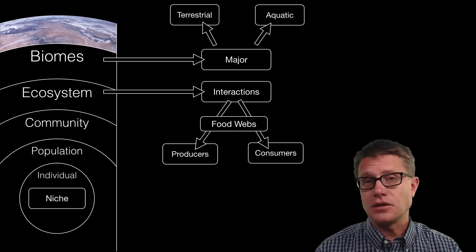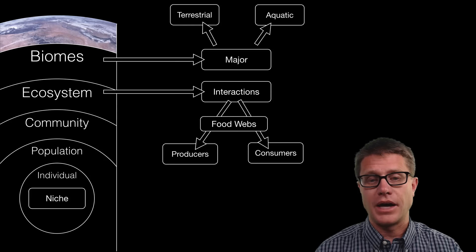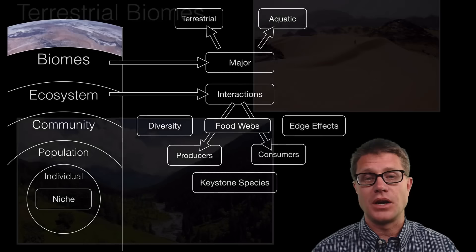We will then jump to individuals and the role of a niche. That is going to be the job that an individual has. We will then move to the importance of keystone species, diversity and then finally edge effects in keeping that ecosystem healthy.